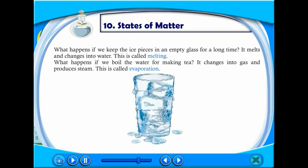What happens if we keep ice pieces in an empty glass for a long time? It melts and changes into water. This is called melting. What happens if we boil water for making tea? It changes into gas and produces steam. This is called evaporation.